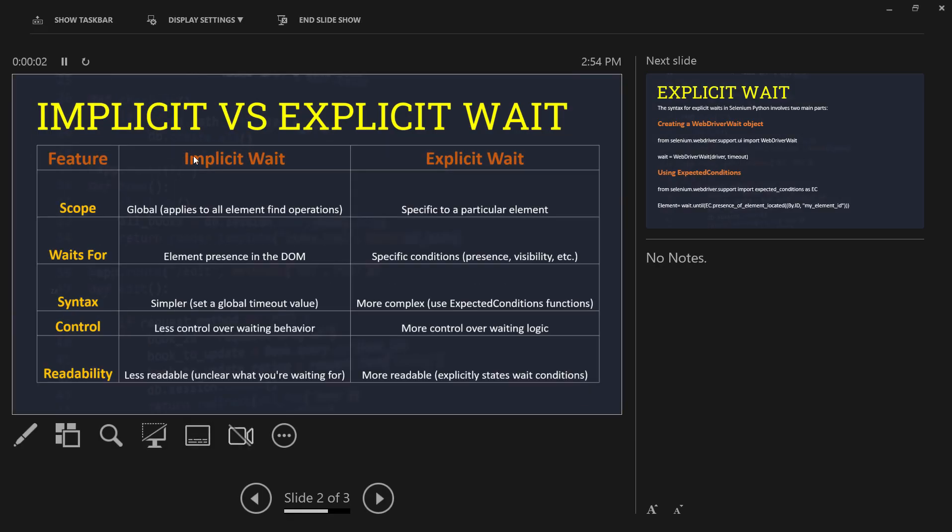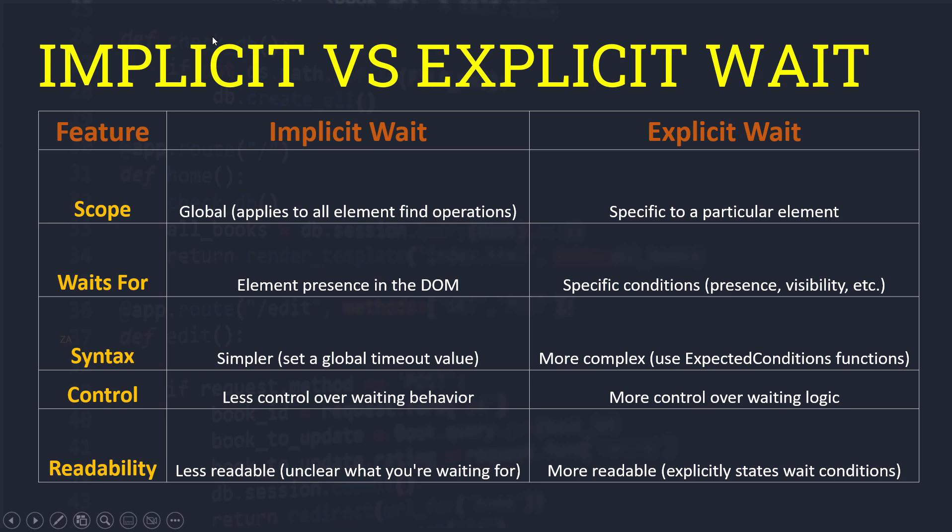If we talk about scope, the implicit wait is a global wait and it applies to all elements, whereas the explicit wait is specific to a particular element. The implicit wait waits for element presence in the DOM, whereas the explicit wait works based on a specific condition, for example presence, visibility, and so on. When we talk about syntax, the implicit wait syntax is simpler and easier compared to the explicit wait.